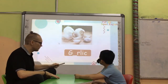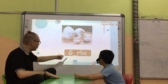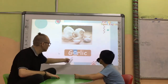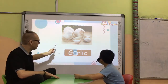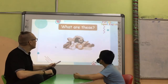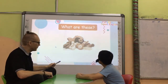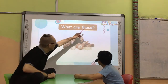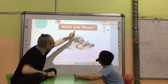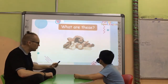What letter is missing? Letter A. And what is it? Letter K. What are these? These are? They are mushrooms.